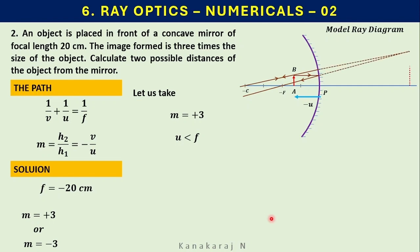But when you extend these rays in the backward direction, then they meet at a point and form the head of the image. This is a virtual image. m equals h2/h1 equals minus v/u equals plus 3. From here, we can find v: v is minus 3u.